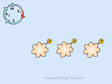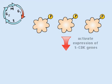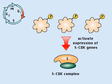One target of these transcription factors are genes encoding components of the S-phase CDK complex. At this point, S-phase CDK function is blocked by a specific inhibitor.